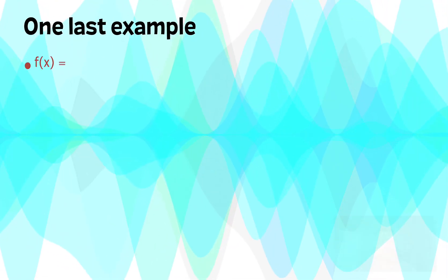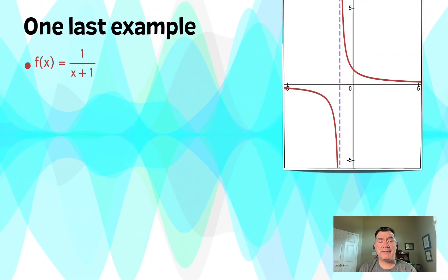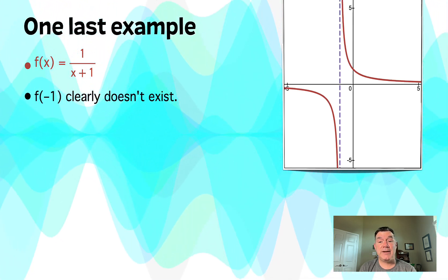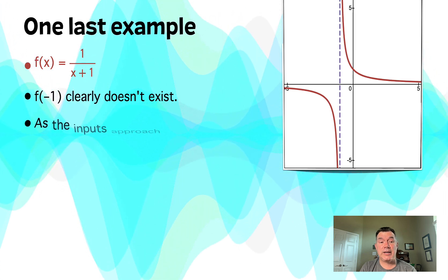Okay, one last example. We're going to look at f(x) = 1/(x + 1). There's the graph of it to the right. And as you can see, f(-1) clearly doesn't exist. There's a vertical asymptote there.